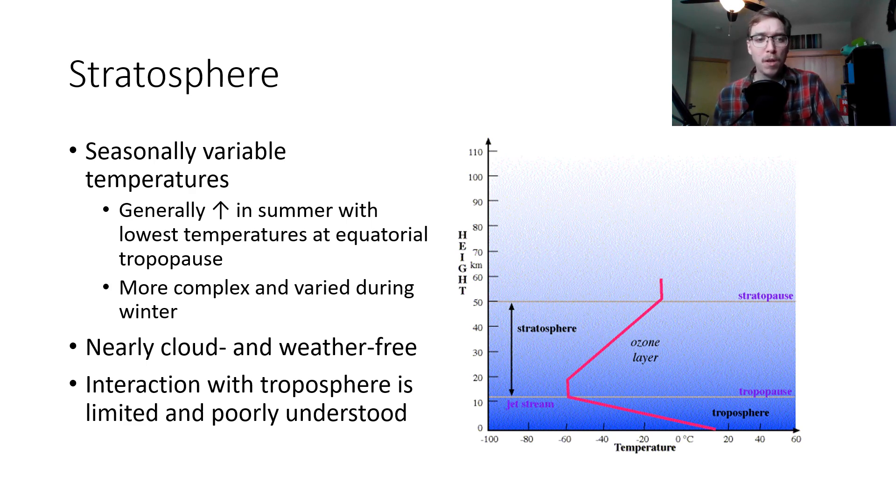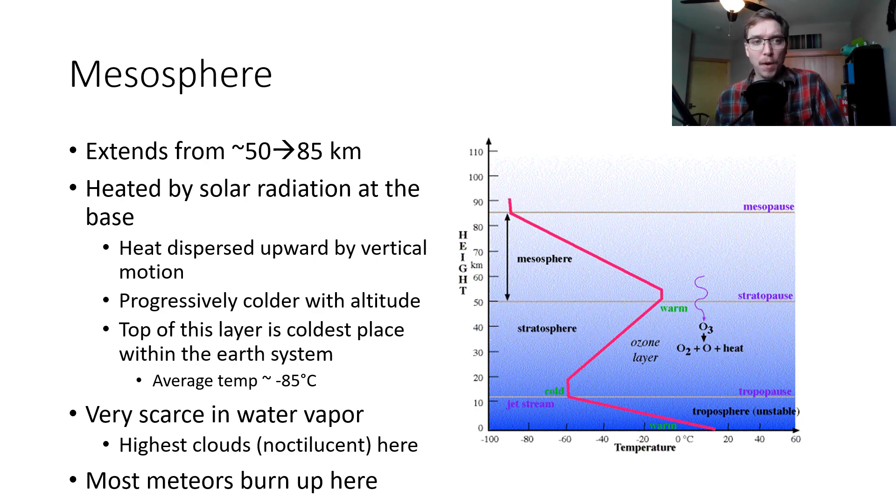Next we move into the mesosphere. It extends from about 50 to 85 kilometers in altitude. It is heated by solar radiation at the base. Heat is dispersed upward by vertical motion, so you get progressively colder with altitude. The top of this layer is the coldest place within the Earth system - negative 85 degrees Celsius on average. Very scarce in water vapor, so the highest clouds here are noctilucent clouds, they exist here. Those are tough to see and there's not much that happens regarding us and noctilucent clouds. And another fun fact, most of our meteors that are entering the Earth atmospheric system burn up within the mesosphere.